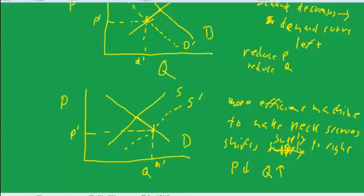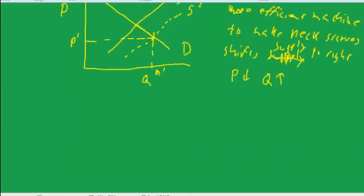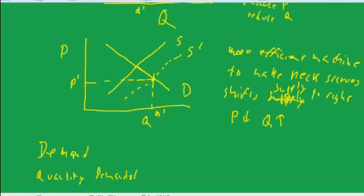There's a distinction that we make in doing this analysis between demand and the quantity demanded. In this example, demand stayed the same because the demand curve did not shift. The quantity demanded, however, increased because of the supply shift.